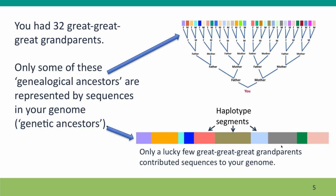In fact, it's the second option that actually happens. In our genome, we have segments from some of our ancestors, but for many ancestors we don't have any segments at all. All of these great-great-great-grandparents are true genealogical ancestors — they are the parents of the parents of the parents of your parents — but many of them are not genetic ancestors, in that you no longer have any pieces of DNA in your genome inherited from them.